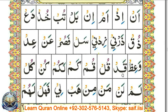قاف دال فتح — قد. قاف لام ضم — قل. قاف ميم ضم — قم. قاف ميم فتح — كم. لام فتح — ل. قاف ميم ضم — كم. لكم.